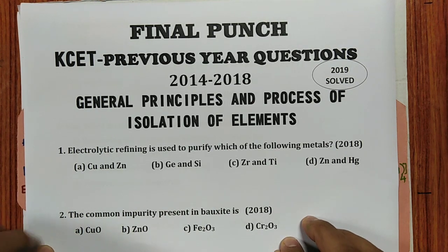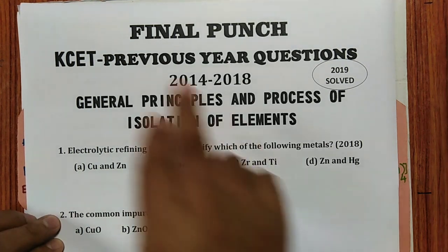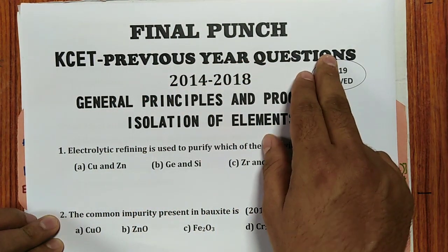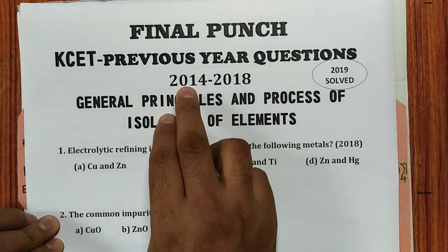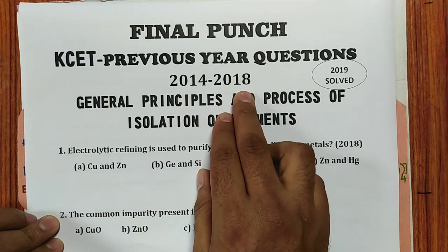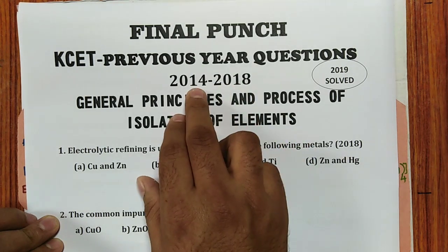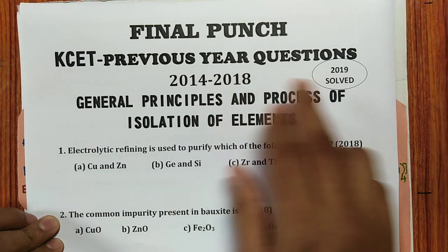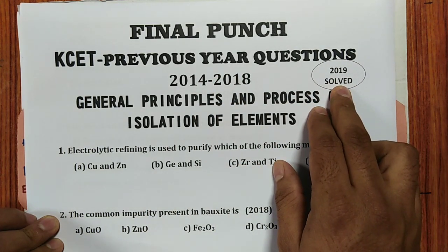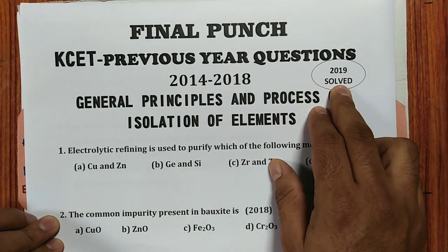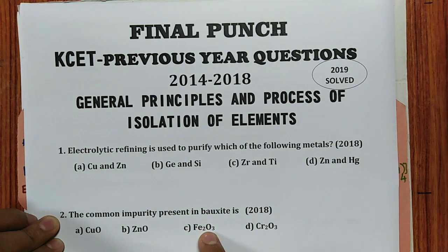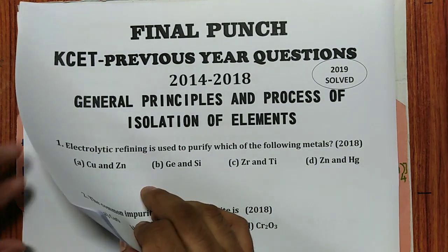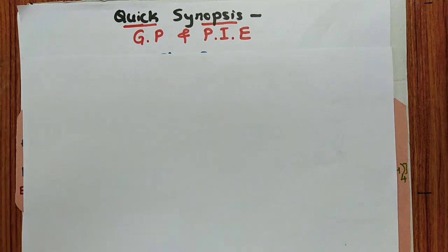Hello students, welcome to RH Chemistry. In today's final punch, I am going to discuss KCIT previous year questions on general principles and process of isolation of elements. Question papers from 2013 to 2018 have been discussed, and the 2019 paper link is given in the description. Before starting the questions, let us discuss some important synopsis points, then we will move to the questions.